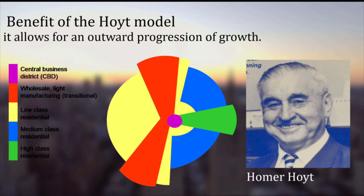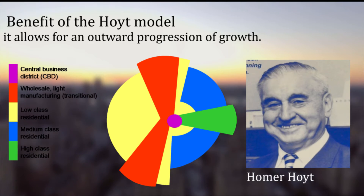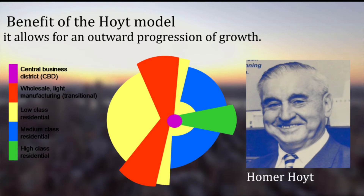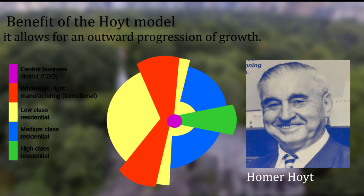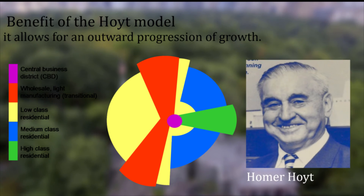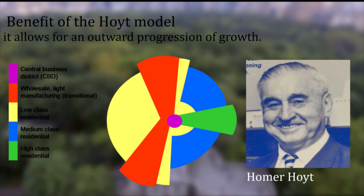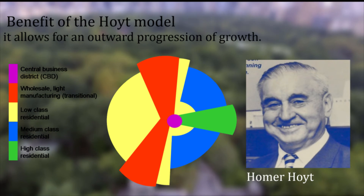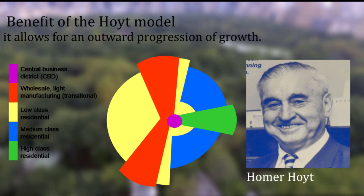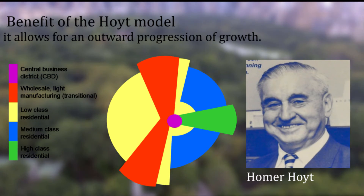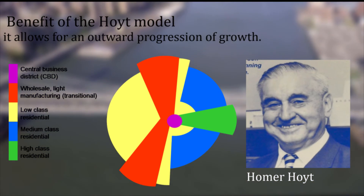The model brings in location of industrial and environmental amenity values as determinants of residential place. For example, sectors of high-class residential areas tend to grow towards higher ground, sites with a better view, more open space, the homes of influential community leaders, and existing outlying smaller settlements.